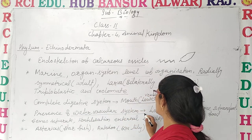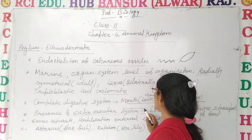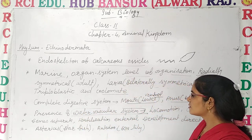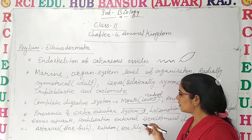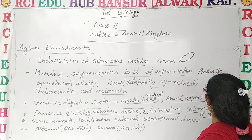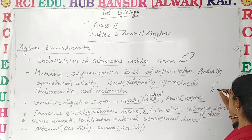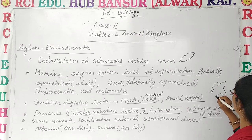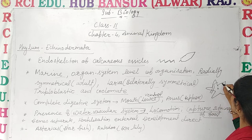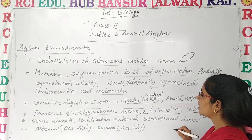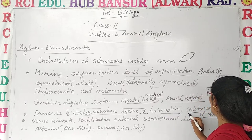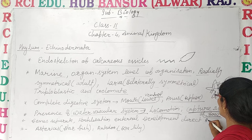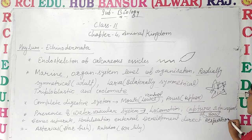The presence of the water vascular system is a very important and peculiar feature of Echinodermata. There is a canal system through which water enters and exits. The water vascular system helps in locomotion, capture and transport of food, and respiration. This is an important and peculiar feature.